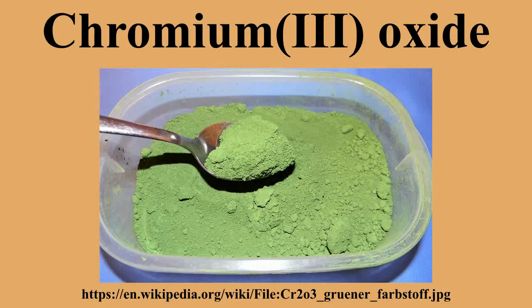The oxide is also formed by the decomposition of chromium salts such as chromium nitrate, or by the exothermic decomposition of ammonium dichromate: (NH4)2Cr2O7 → Cr2O3 + N2 + 4H2O. The reaction has a low ignition temperature of less than 200 degrees Celsius and is frequently used in volcano demonstrations.